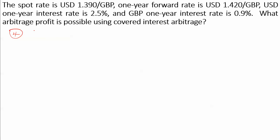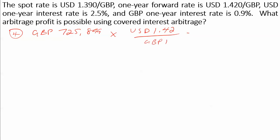After the one year is up, it's time to sell the British pounds at the forward price, which we had locked in at the beginning of the year. We had 725,899 British pounds; we convert them at the forward price of 1.42 US dollars per one British pound, giving us $1,030,777.